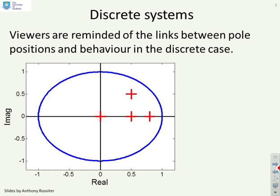First we can remind you of the links between pole positions and behavior when you have a discrete system. You'll notice we've drawn here the unit circle because we're in discrete time and that's the stability boundary.